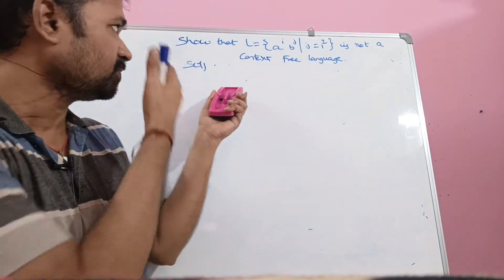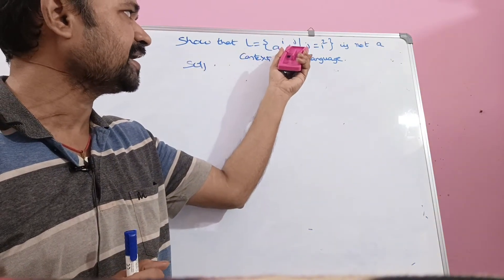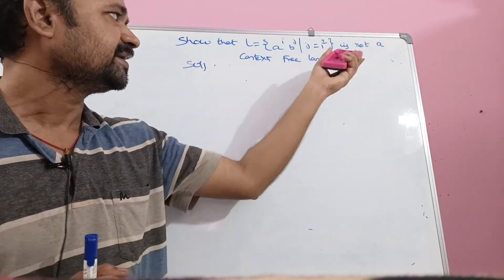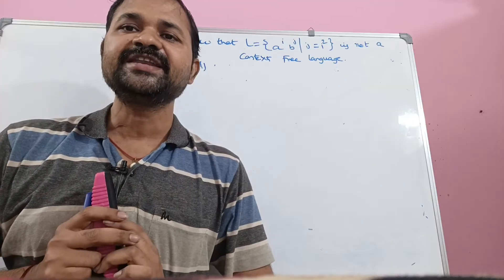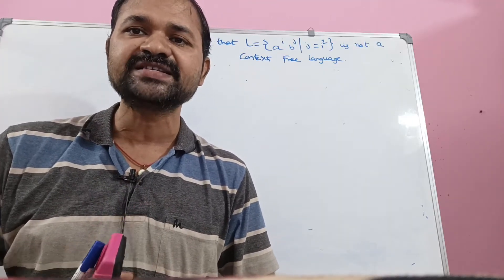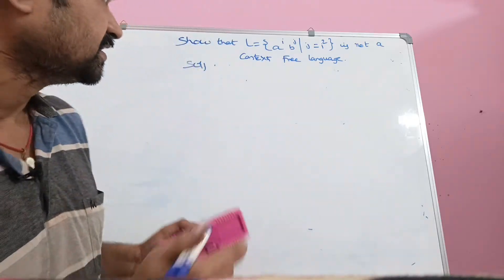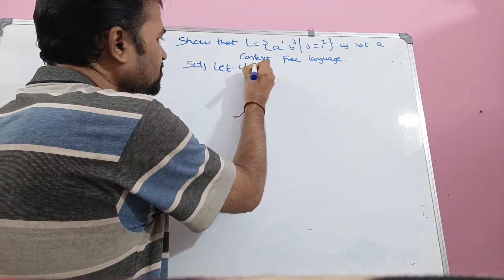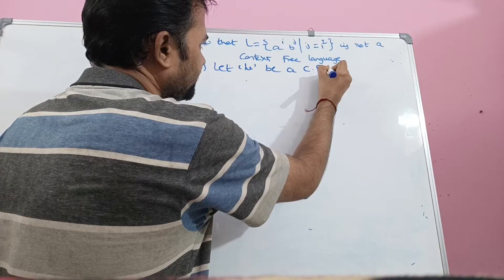Let us solve this problem: show that L = {a^i b^j | j = i²} is not a context-free language. We can use the Pumping Lemma in order to prove a language is not context-free. Initially, we have to assume this language is a context-free language. Let L be a context-free language.